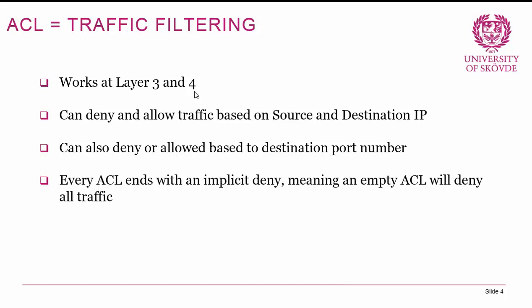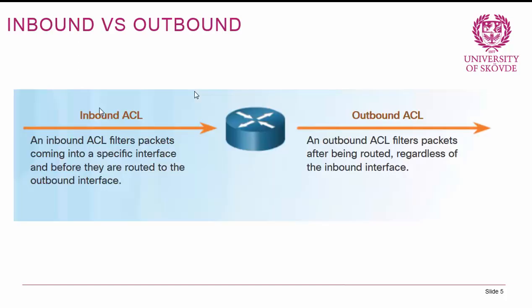In terms of logic, when we apply ACLs we apply them to interfaces. We can also apply them to the virtual terminal lines, so we can have an ACL that restricts who is allowed to access the router using telnet or SSH. We can apply them inbound or outbound to an interface. Inbound filtering means we filter packets coming into the interface before they are routed, while outbound filtering means we filter packets after they have been routed, on the way out from the router, regardless of the inbound interface.